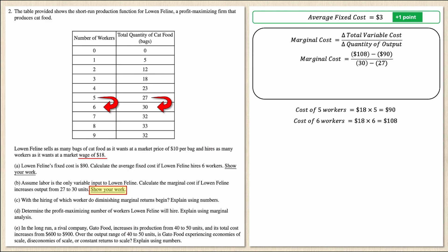Marginal cost equals $6. In words, as output increases from 27 to 30 bags — going from five workers to six workers — the marginal cost for that jump is $6. If you said all of this and showed your work, that is your second point. Let's move on to Part C.